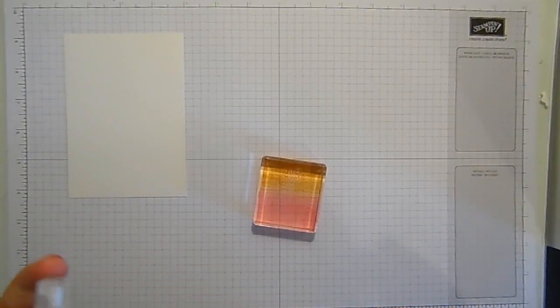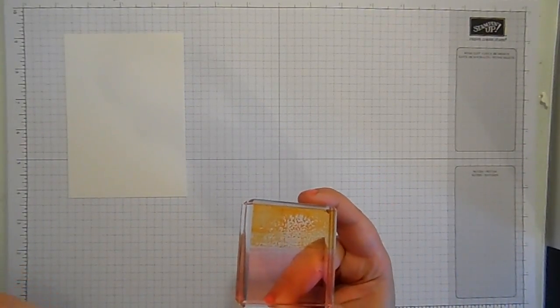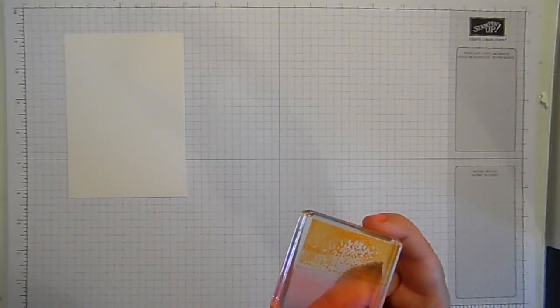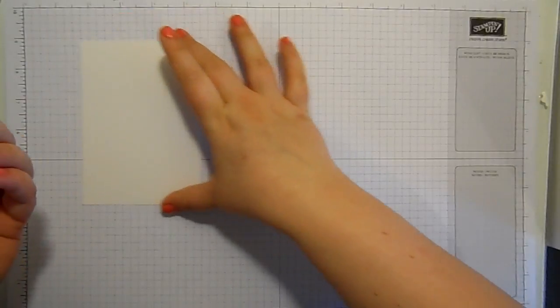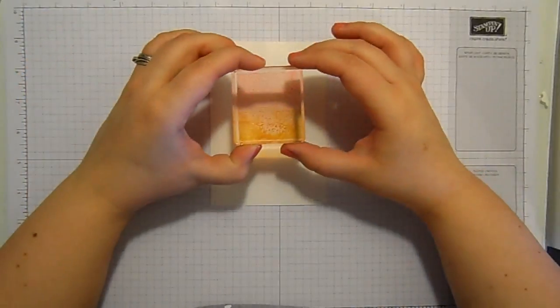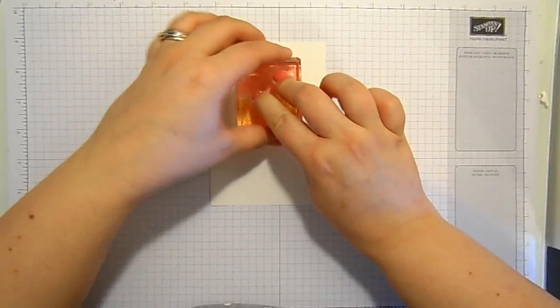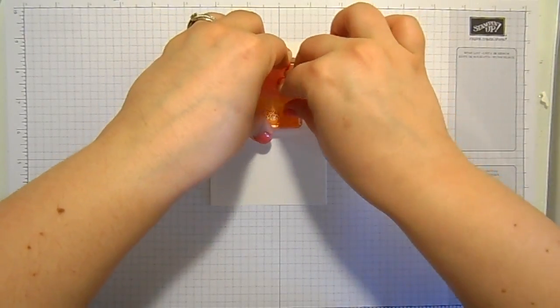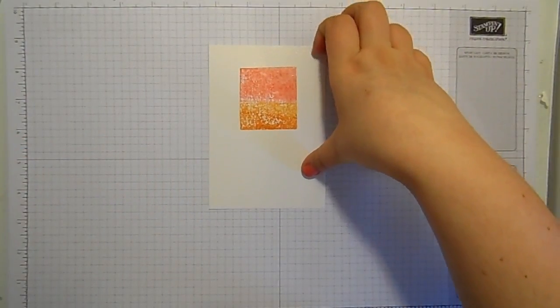I've then got a stamping spritzer and I'm just going to very gently mist over with a bit of water. Not very much, just a little bit. Don't want it too runny and I'm going to stamp this down. I'm going to stamp with the pink on the top and the Peekaboo Peach underneath. Try and get it sort of central. Straight down, straight up. Isn't that so pretty?